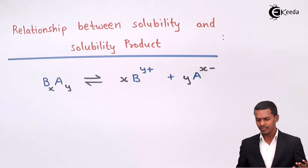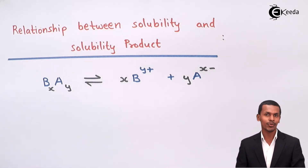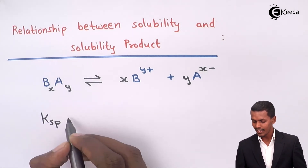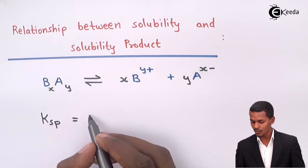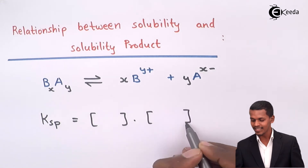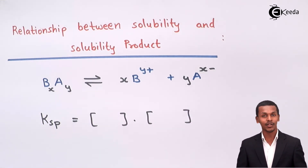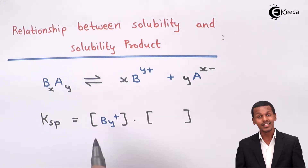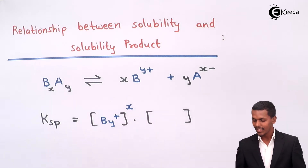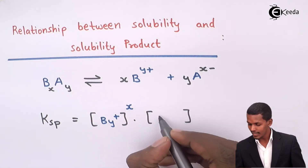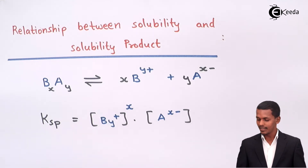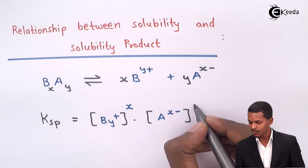These are the respective ions we get. We can express the solubility product in this case. The solubility product, denoted K_sp, is the product of the concentrations of the ions produced by the electrolyte. So the product for B^(y+) raised to x, and for A^(x−) the stoichiometry is y, so it is raised to y.